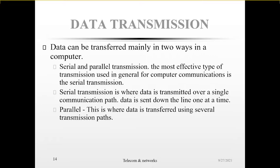Data transmission exists with equipment; we can call this data transmission equipment. Data can be transmitted mainly in two ways: in serial or parallel form. Serial transmission means that data is sent over a single communication path at a time — an example would be coaxial cable. Parallel data transmission is where data is transmitted over more than one transmission path; for example, optical fiber. Optical fiber cables are hair-like threads that can transmit data in the form of light.